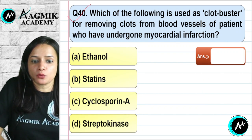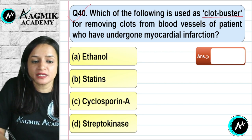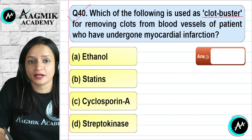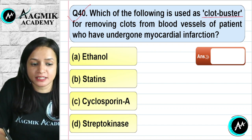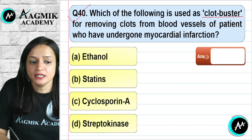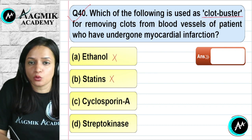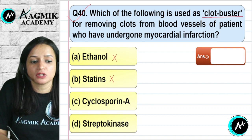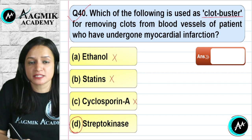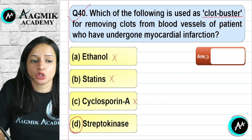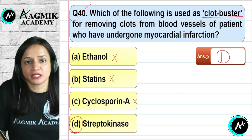Question number 40 (listed as 48th): Which of the following is used as a clot buster? A clot buster dissolves blood clots in patients who have undergone myocardial infarction (heart attack). Ethanol is not used, statin lowers cholesterol not clots, and cyclosporine A is immunosuppressive. Streptokinase acts as a clot buster. The correct option is D.